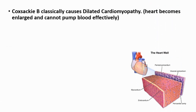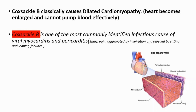Coxsackie B can also affect the heart. It can cause dilated cardiomyopathy, where the heart becomes enlarged and cannot pump blood effectively. It is one of the most commonly identified infectious causes of viral myocarditis and pericarditis — the layers of the heart. In pericarditis, you can see sharp pain aggravated by inspiration and relieved by sitting and leaning forward.